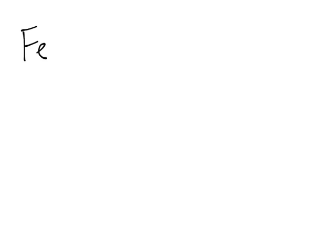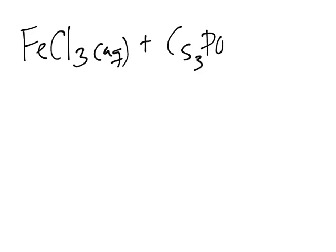So we want to find the molecular, total ionic, and net ionic equations. For this first case, it says it's an addition of aqueous iron(III) chloride and cesium phosphate. From your nomenclature knowledge, iron(III) chloride is FeCl₃, and they told us it's aqueous. Plus, cesium phosphate is Cs₃PO₄, and that is also aqueous.